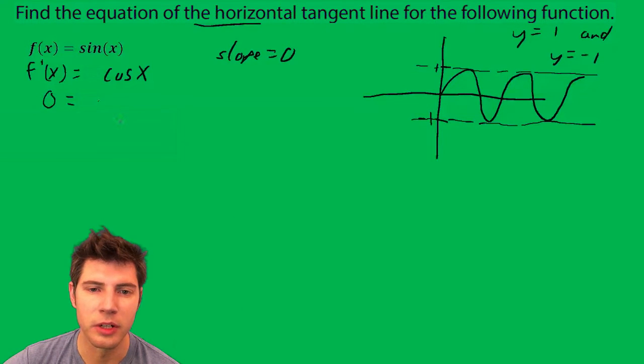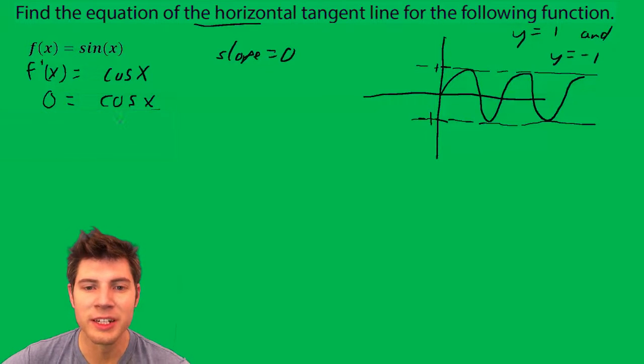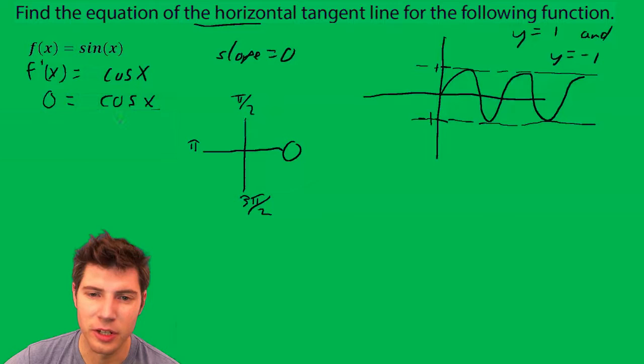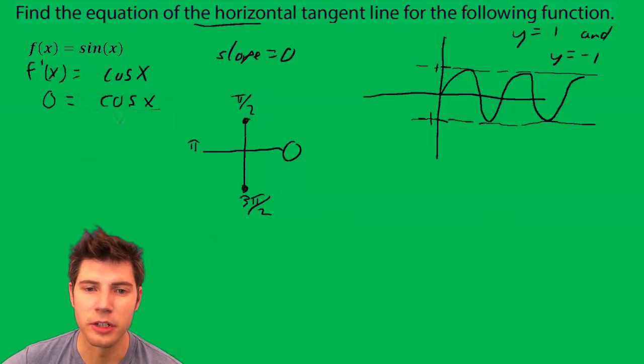So we plug in zero. Zero equals cosine x. When is the cosine zero? So if we look at the unit circle, we know that cosine is zero here and here, and then also all the coterminal angles.